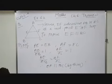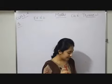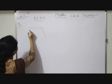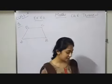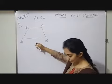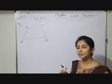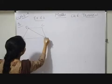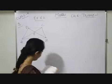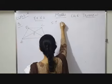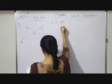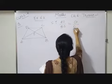One more question. ABCD is a trapezium. Let me draw a trapezium: A, B, C, and D. ABCD is a trapezium in which AB parallel CD and its diagonals intersect each other at point O. We have to show that AO upon BO equals CO upon DO.